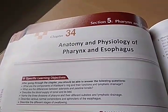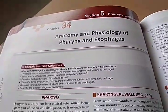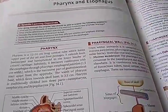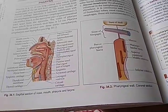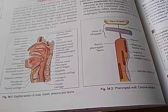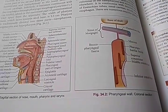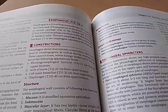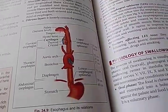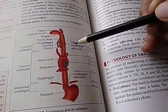They are covering pharynx and esophagus. The pharyngeal wall is shown in sagittal and coronal sections. For the esophagus, the constrictions are covered — the upper esophageal sphincter and lower esophageal sphincter.